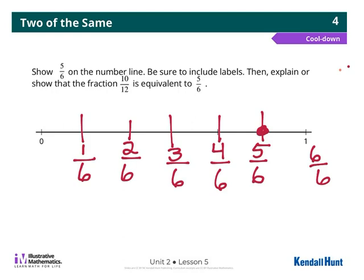Hmm. I wonder if I pick another color. Oh, 6 times 2 is 12. So I think I could split each sixth in half, and then I'll have 12 equal parts. Let's just see.